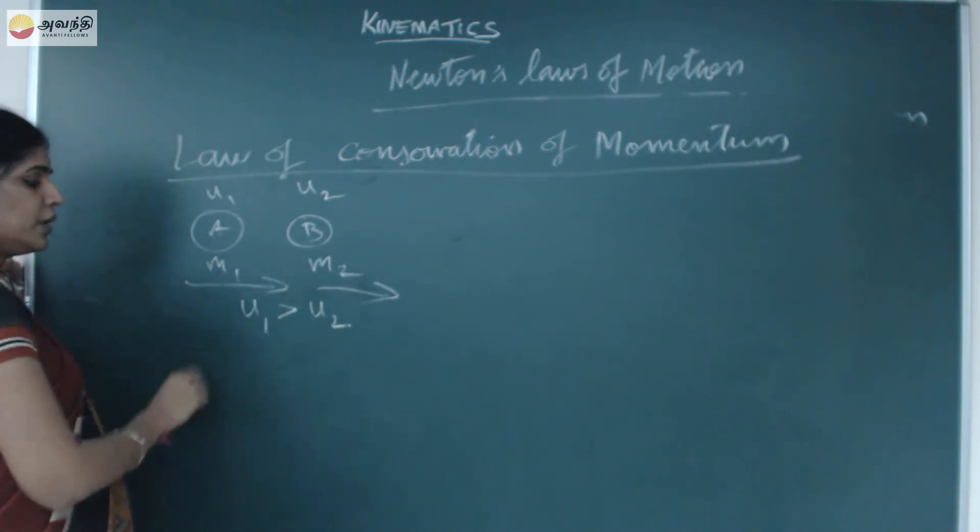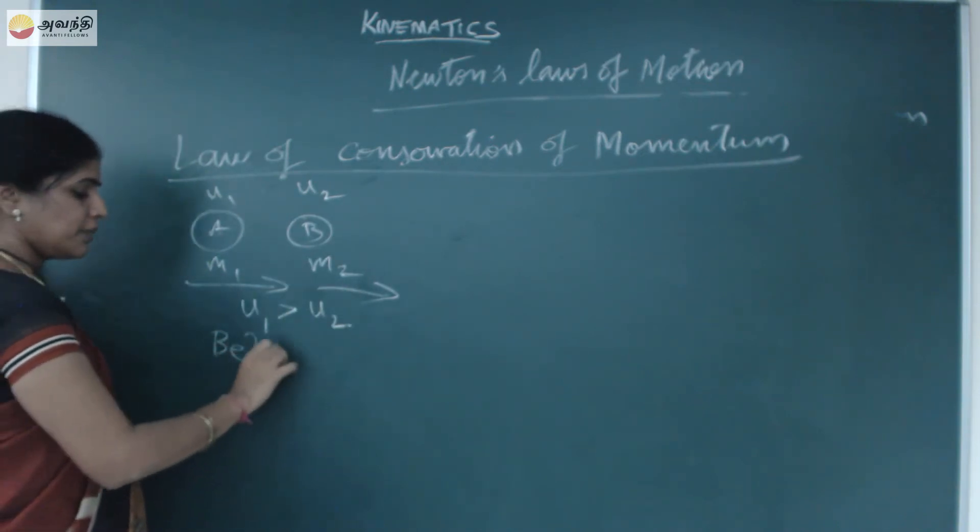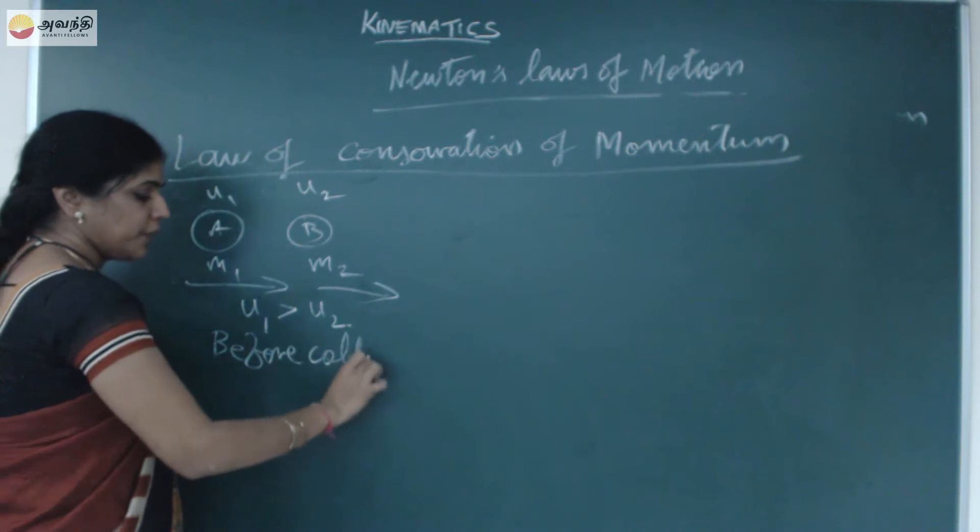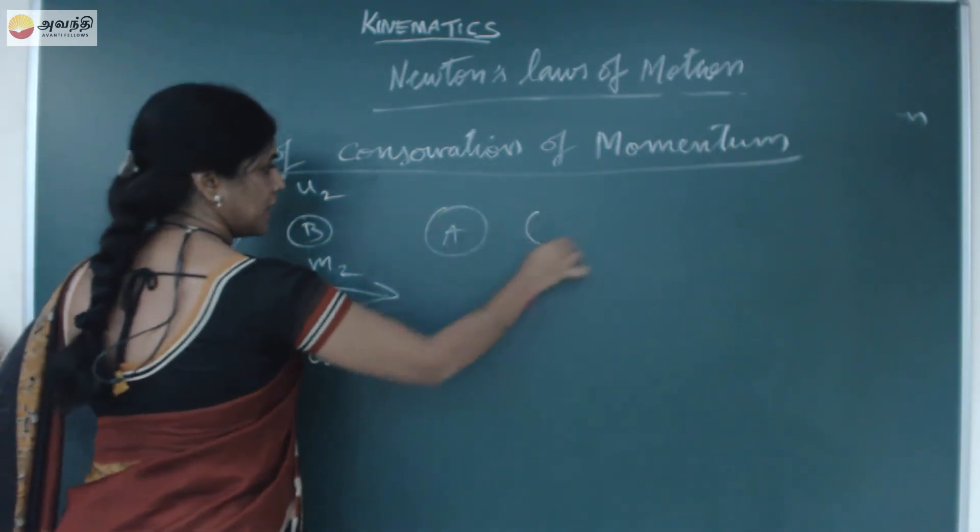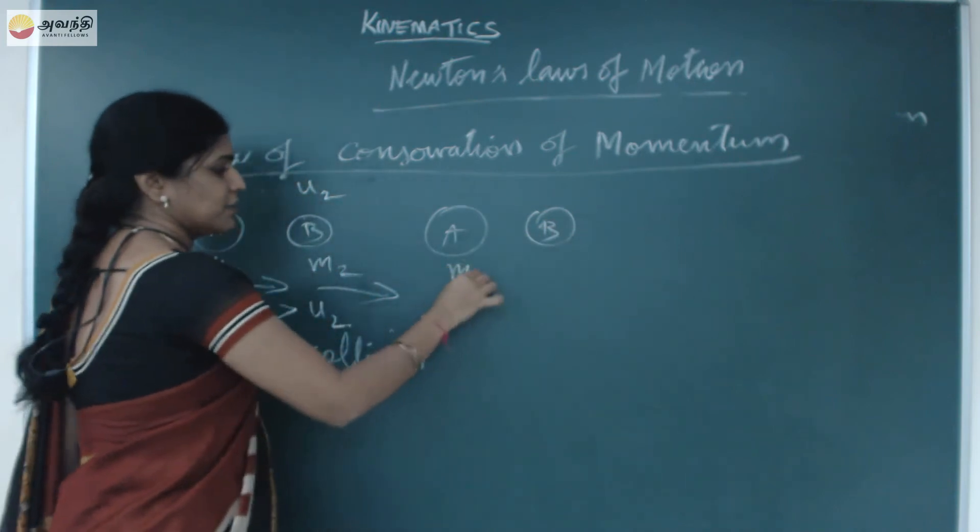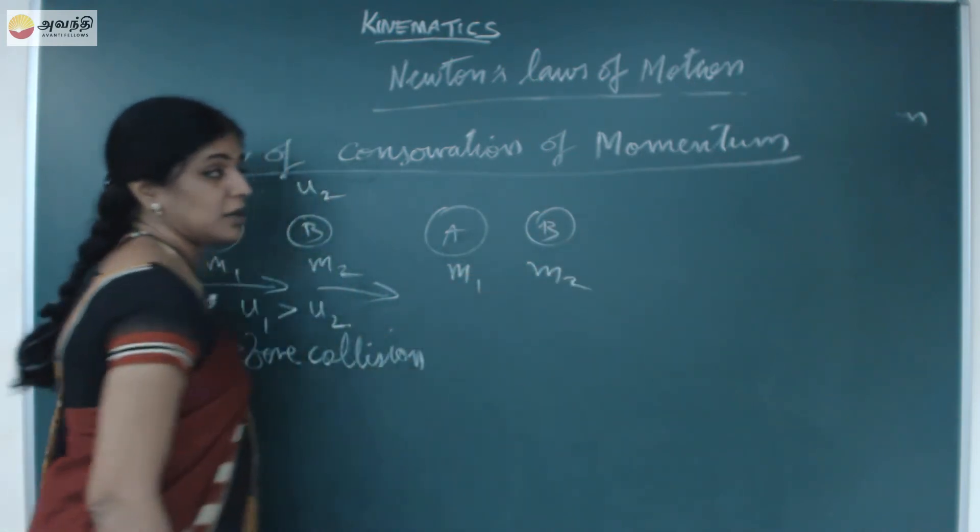Now, if u1 velocity is greater than the particle moving at u2, collision will occur. Now before collision, I am just assuming like this. So they are going to collide. After collision, these two objects A and B, they will have the mass difference. But after collision, they will move at different velocities.